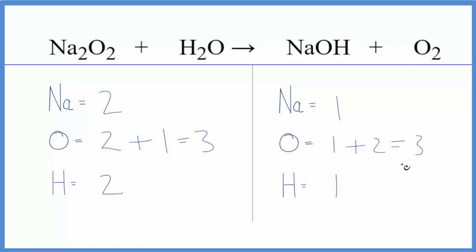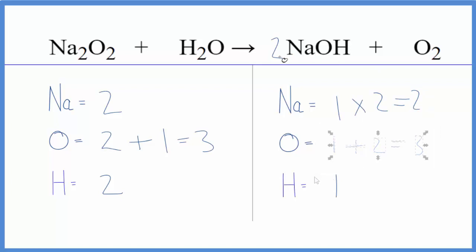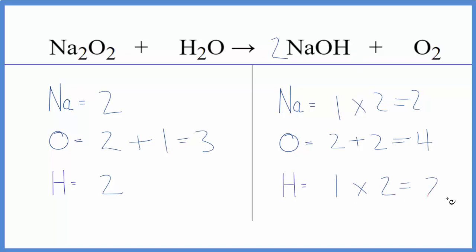At this point, it looks like I could put a two in front of the sodium hydroxide. That would balance the sodiums and the hydrogens — one times two, those are balanced. Oxygens we do need to change, so we have one times two plus these two and the O2. Four, and then hydrogen, one times two. So we did balance the hydrogen atoms.